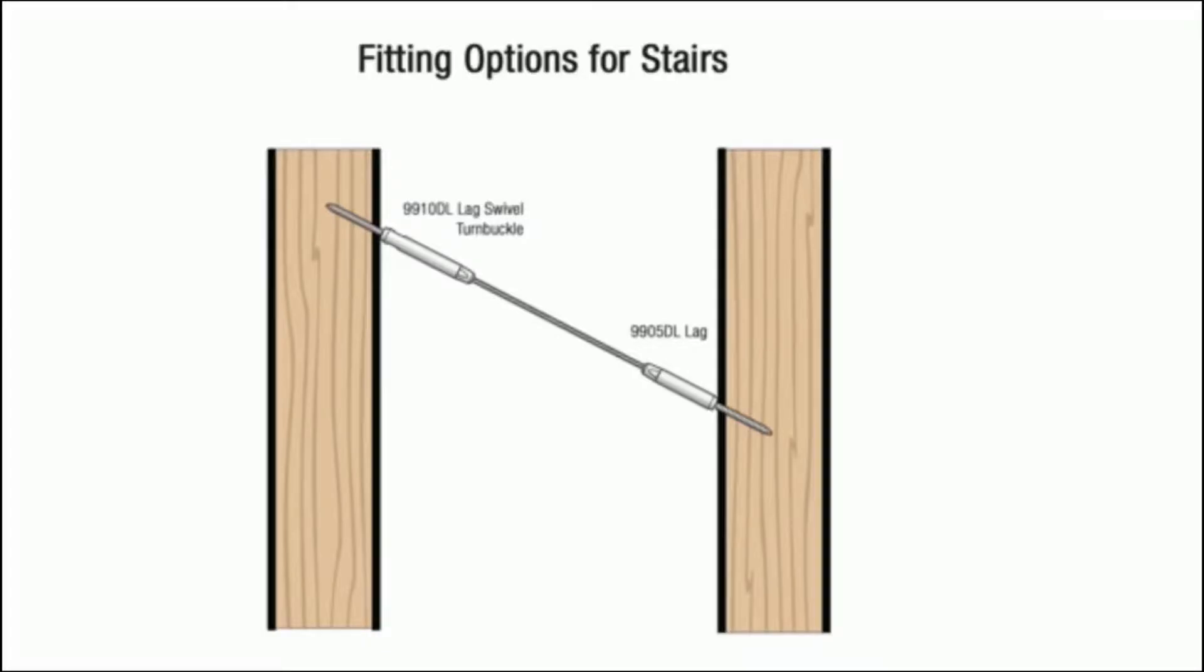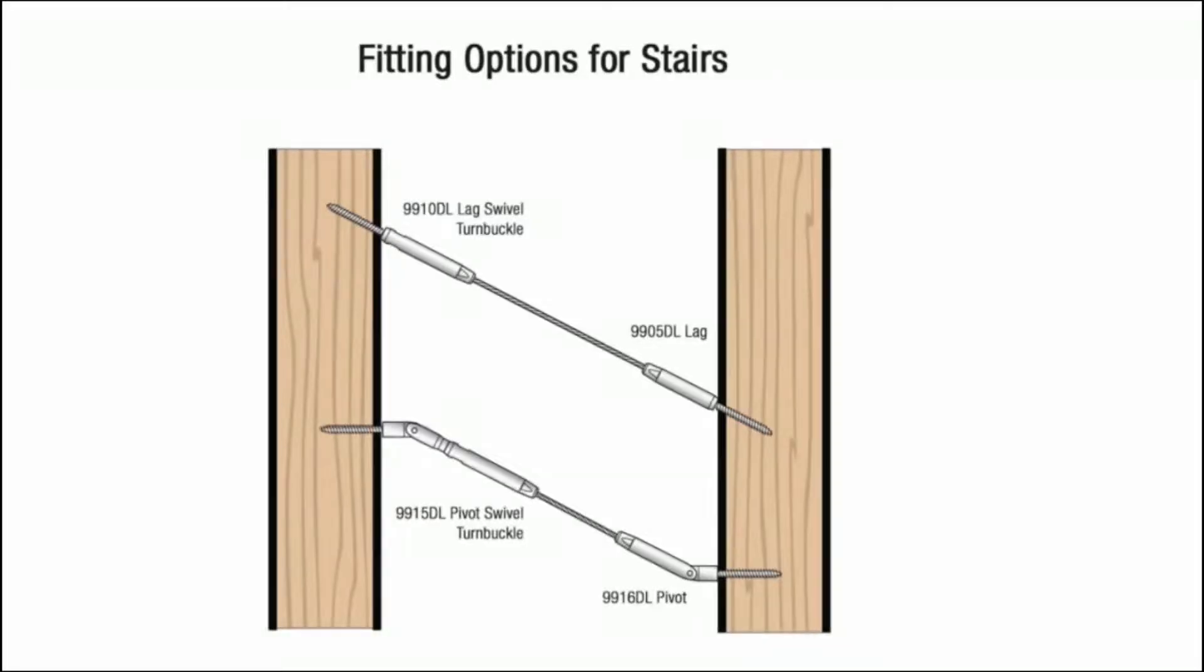As an alternative, you may use Quick Connect pivot fittings. See our instructional video for cable rail installation for pivot fittings.